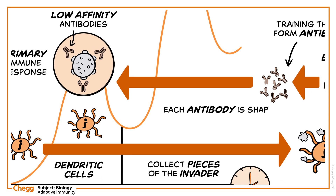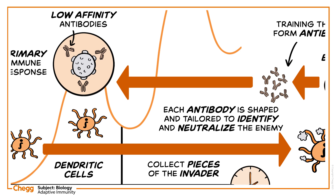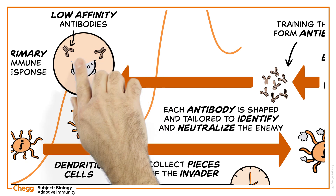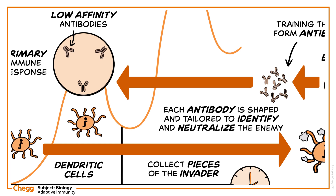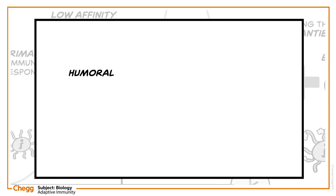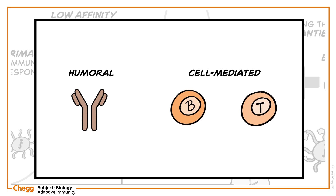Each antibody is shaped and tailored to identify and neutralise the enemy. The immune system deploys these weapons until the infection is wiped out, ready to respond even faster the next time. There are two types of adaptive responses: humoral, carried out by antibodies, and cell-mediated, carried out by B cells and T cells.